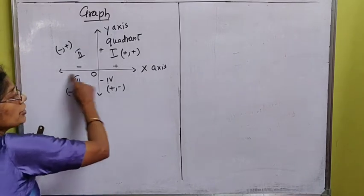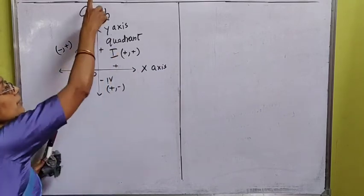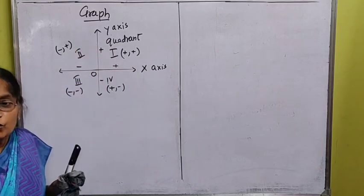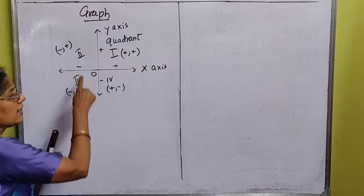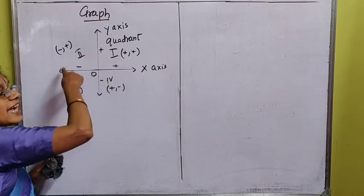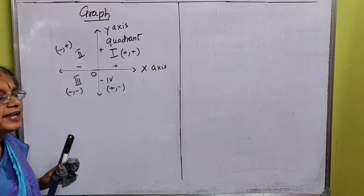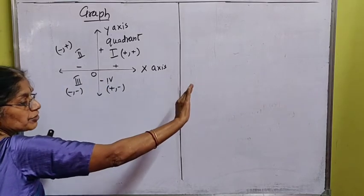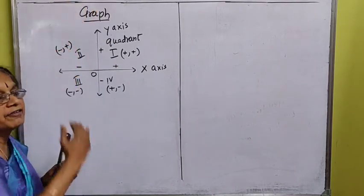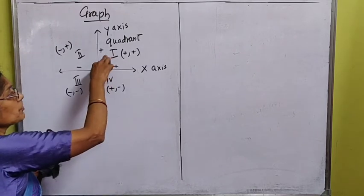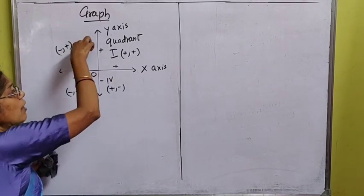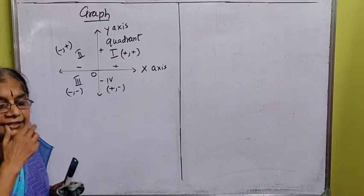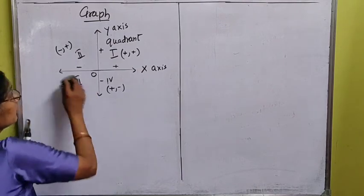Always remember: the horizontal line represents the x-axis and the vertical line represents the y-axis. The graph is divided into four quadrants. In the first quadrant, x and y are both positive because, on the number line, rightward is positive and upward is positive. In the second quadrant, x is negative and y is positive. In the third quadrant, both x and y are negative. In the fourth quadrant, x is positive and y is negative.